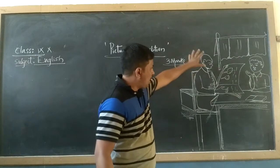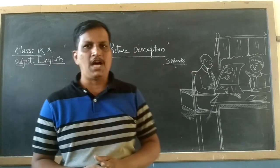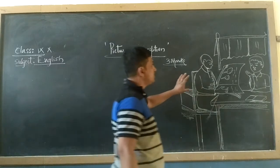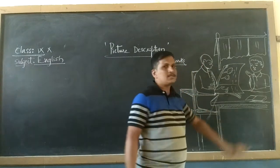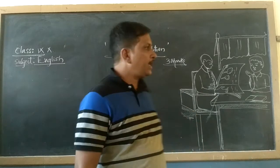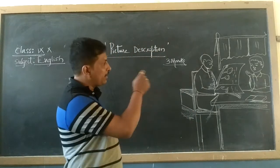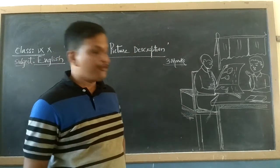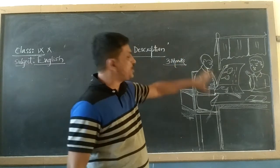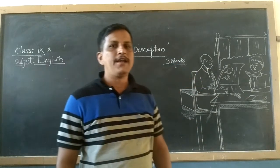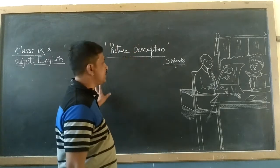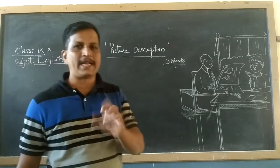Now I have shown you a beautiful picture in the book. Such printed images will be given in your exam. By observing that image or picture, you want to identify the existing things in the picture and you have to construct sentences and write them in the form of a paragraph.